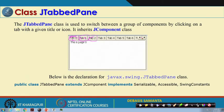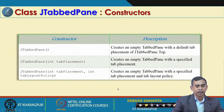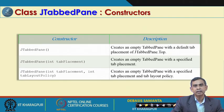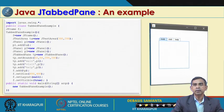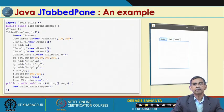JTabbedPane helps organize different menu items on the frame itself. Tabs can be placed at the top (default) or bottom using the constructor. The constructor JTabbedPane(int tabPlacement) takes values 0, 1, 2, 3 for different positions. There is also a tab layout policy parameter for managing what happens when more items are added. A simple example shows how the tab pane appears inside a container frame.